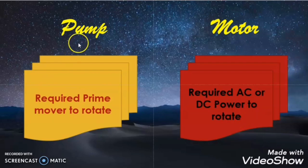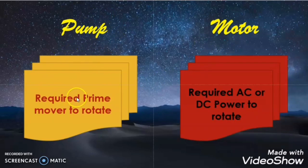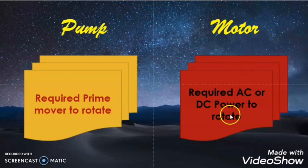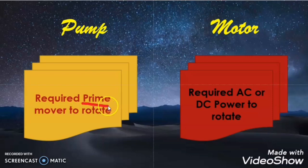The third difference between the pump and motor is that pump requires a prime mover to rotate, but the motor requires a power supply, either AC or DC, to rotate. Here you might have the question: what is a prime mover?